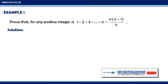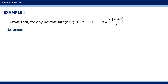Let us consider this example and apply Mathematical Induction in proving the given statement. Prove that for any positive n, 1 plus 2 plus 3 plus and so on and so forth plus n is equal to n times n plus 1 all over 2. The given mathematical statement simply states that if we will be adding consecutive numbers up to n, then their sum will be equal to n times n plus 1 all over 2. For example, if we will be adding 1 plus 2 plus 3 plus and so on and so forth plus 10, the sum of the terms 1 to 10 will be equal to 10 times 10 plus 1 all over 2.